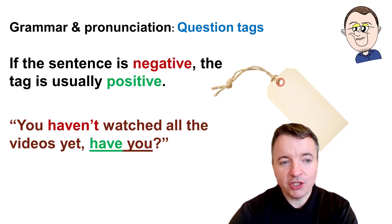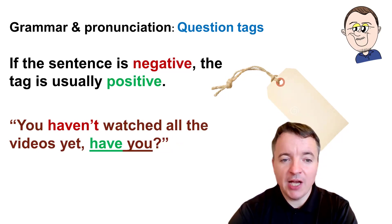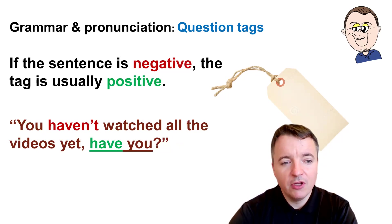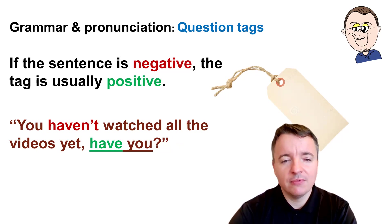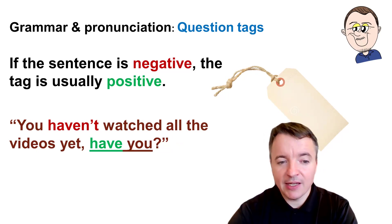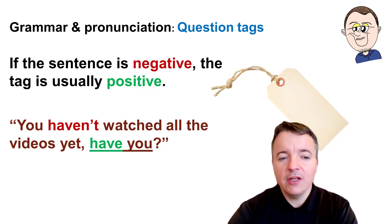And then switch — if the sentence is negative, the tag is usually positive. For example: You haven't watched all of the videos yet. Have you? So 'haven't' is negative, and 'have' is positive.